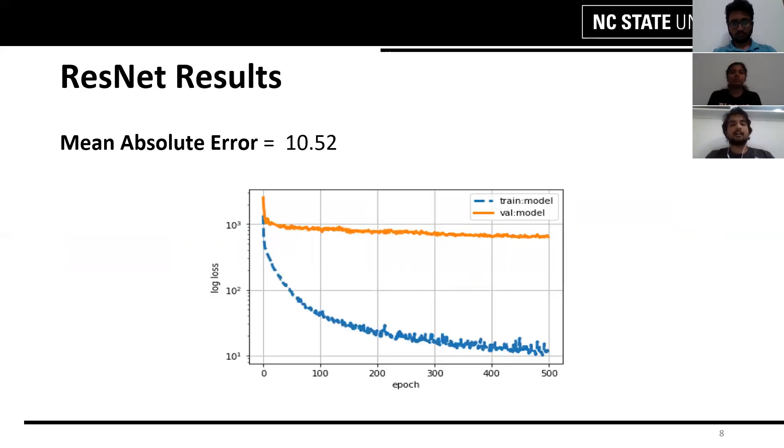We see that the MAE mean absolute error for ResNet training is approximately 10.52. In this slide, we see the training and validation loss through epochs. The training loss decreases gradually at first but then saturates later.